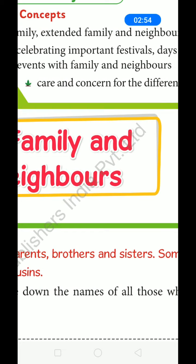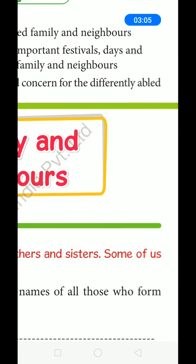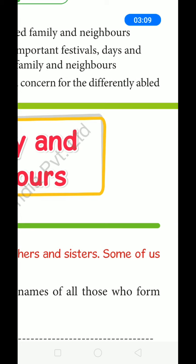Third key concept: care and concern for the differently abled. Differently abled means a person who is handicapped — someone who is unable to do some things. For example, some persons on the roadside don't have one leg or one hand. So, those who are physically unable to do certain things — what should we do for these people?